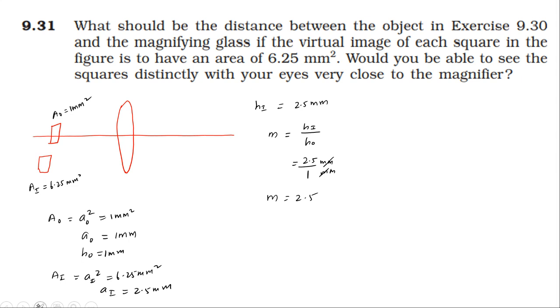So magnification 2.5. Now another formula for magnification is image distance by object distance. So image distance equals magnification times object distance. Image distance v equals 2.5 times u, if u is the object distance.